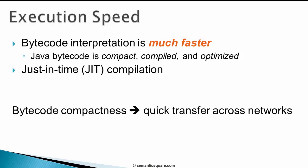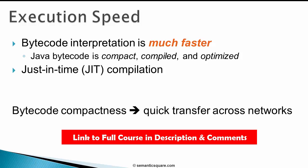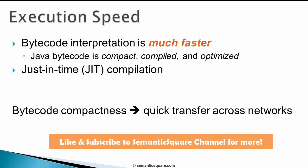The Java bytecode's compact form also enables quick transfer of bytecode across networks. Java was originally designed to work in a networked environment where transferring compiled Java programs — the Java bytecode — across different devices was one of the goals. So Java bytecode and JVM together achieve platform independence without compromising on speed. Now let's test the platform independence capability of Java.